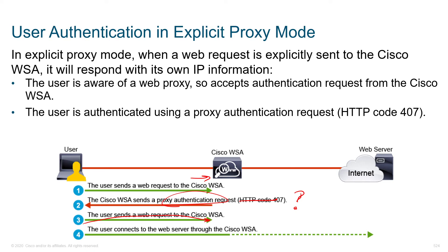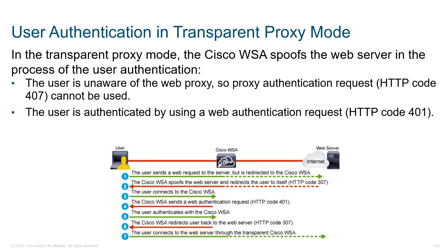We could have leveraged ISE and 802.1x through wireless before they even got onto the network — before they even did DHCP. Now they did DHCP and they're trying to get out to the internet. We grab them again and verify it's actually a user at the terminal and not just a script or malware trying to call home. Once we know who that user is, we allow their traffic to pass through the WSA and hit the web server.